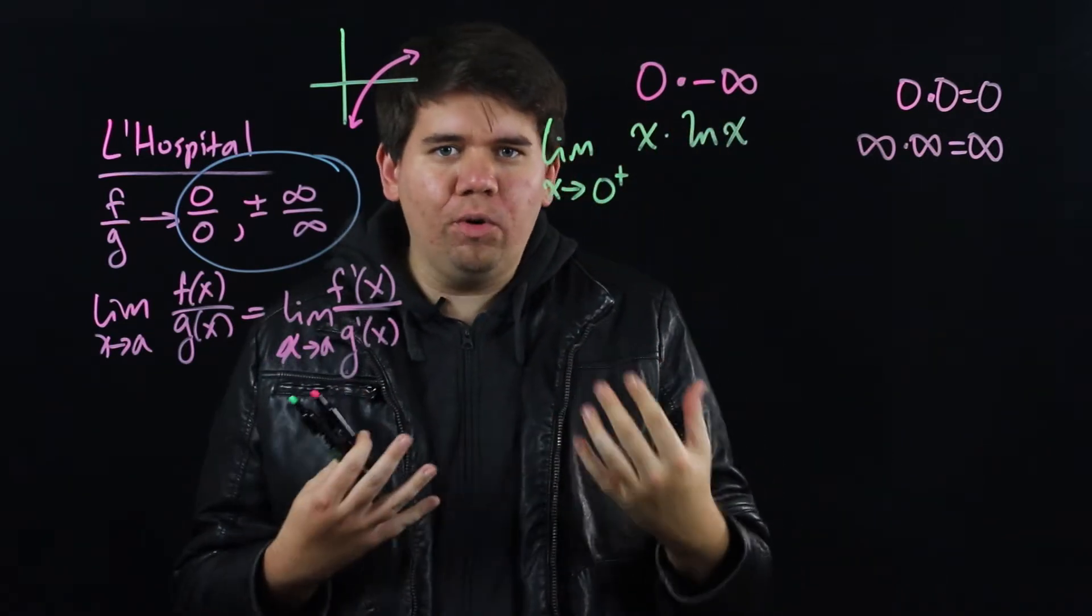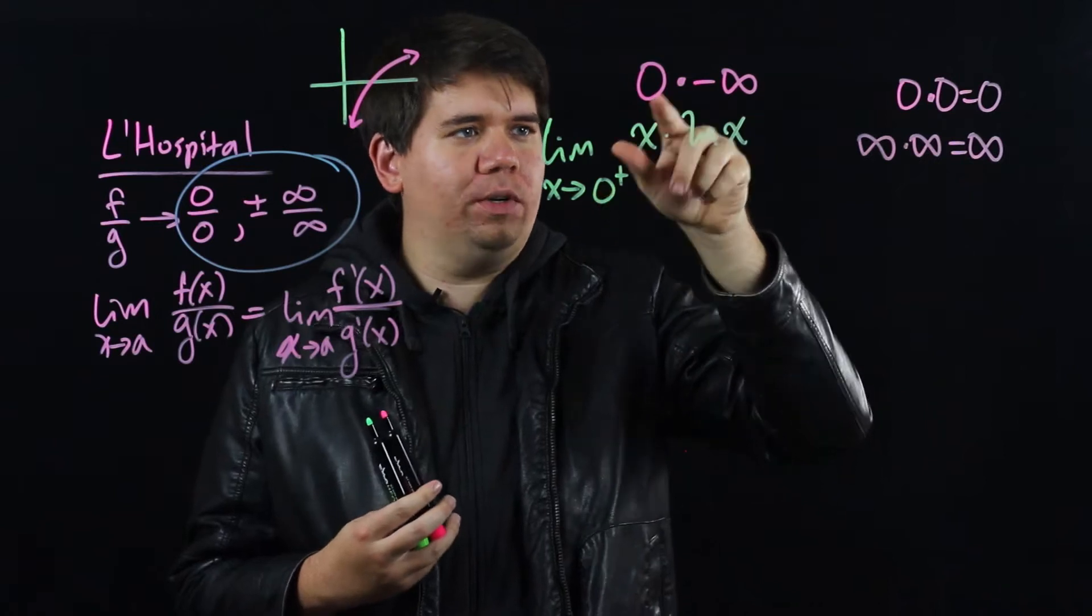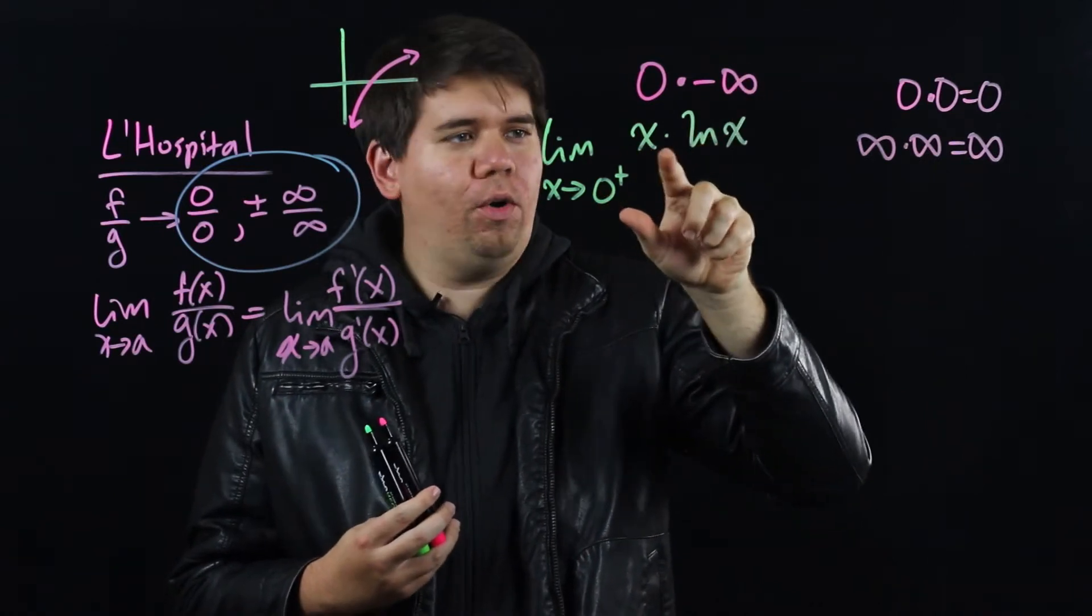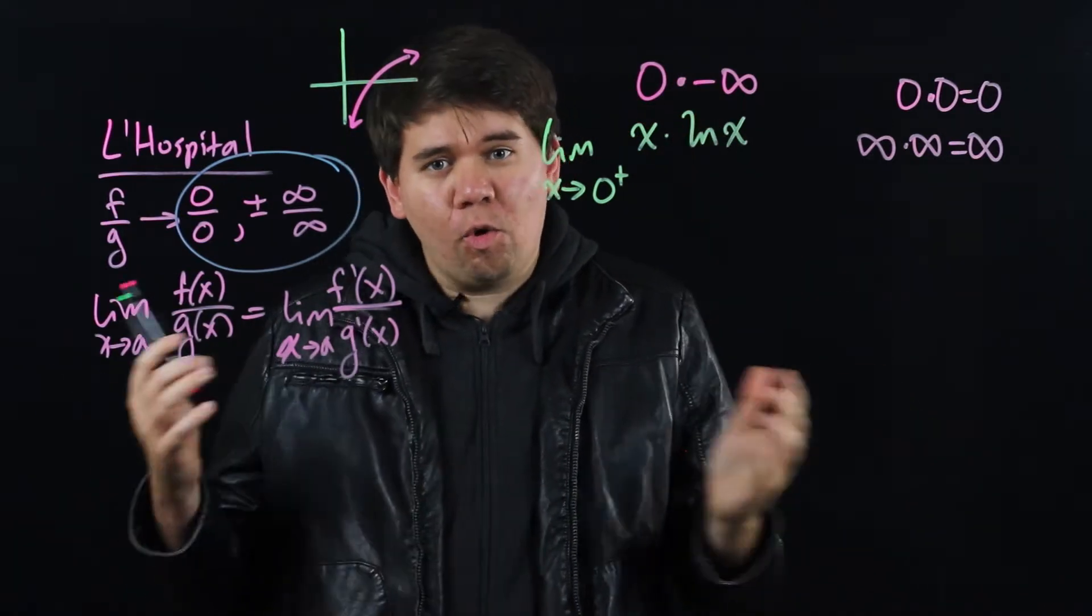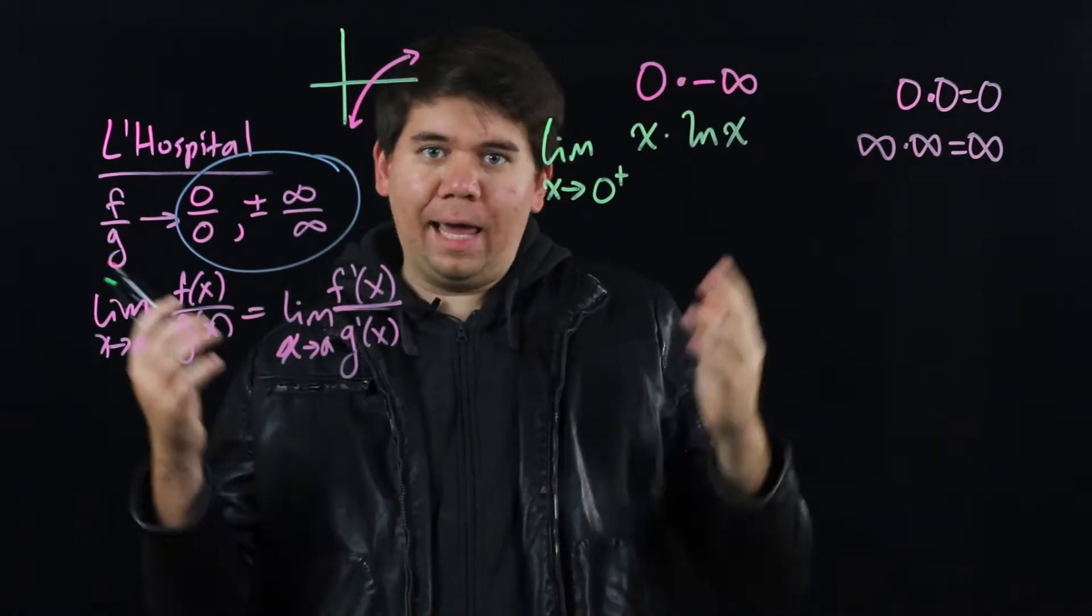Which one's going to rule the day? As x is getting smaller and smaller, will it pull it down to 0? Or as ln of x is getting bigger and bigger, will it pull it to infinity, or in particular negative infinity? Or will it land somewhere in between, like negative 5?